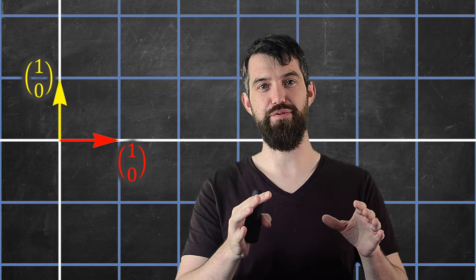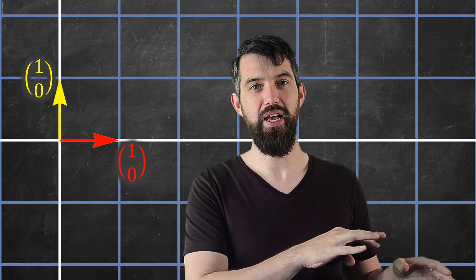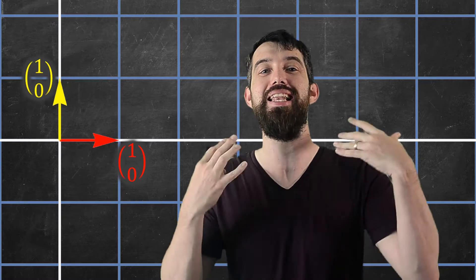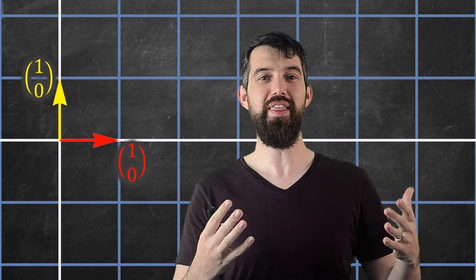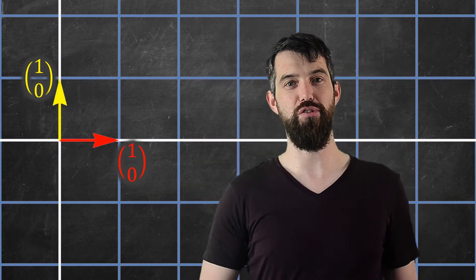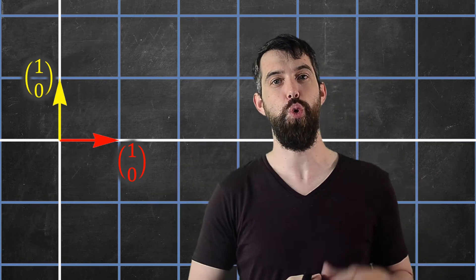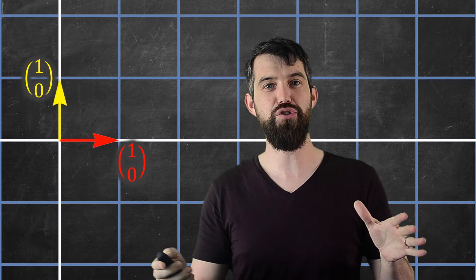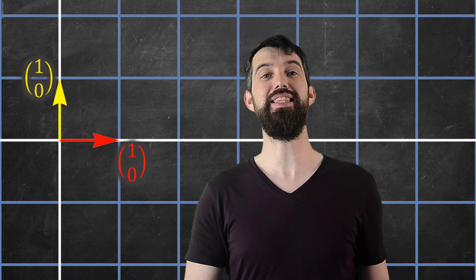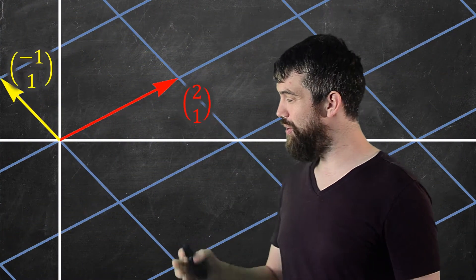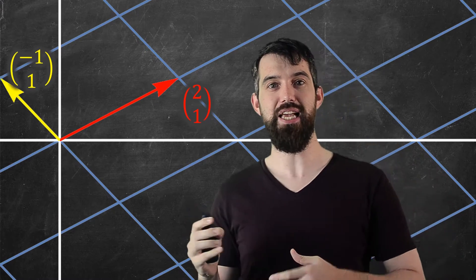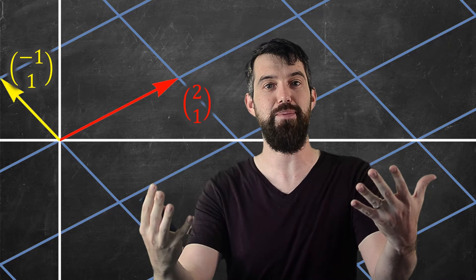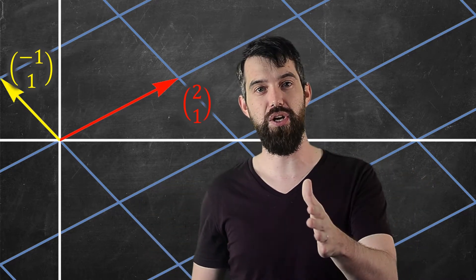For linear transformations from the plane to the plane, there's a really nice way to visualize them dynamically. Here's an example of the two-dimensional plane with the two unit vectors. I can imagine some linear transformation — in this transformation I just stretch the vectors out so that the end of the animation is where the vectors end up, and the beginning is where they start.